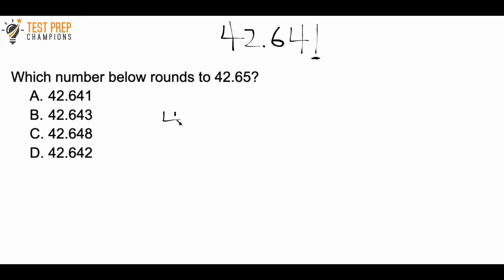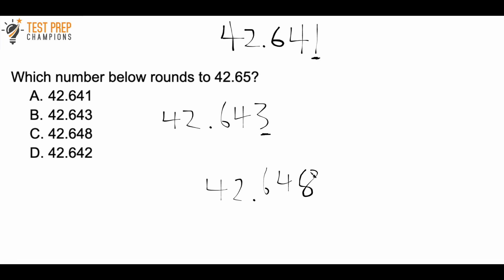Let's check B: 42.643. I want to see if this number is going to round to 42.65, so I look at the number directly to the right of the 4. If it's 5 or greater, it rounds to 42.65 — but 3 is not 5 or greater, so this does not round to 42.65. Let me check C: 42.648. The number in the thousandths place, directly to the right of the 4, is 8 — which is 5 or greater — so this rounds to 42.65. The correct answer is C.